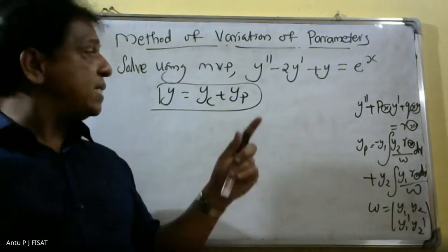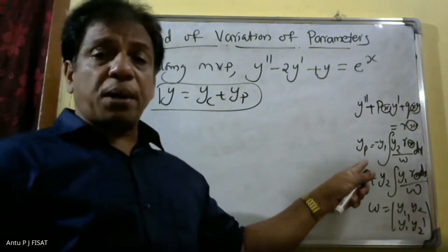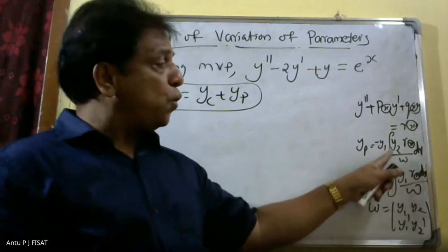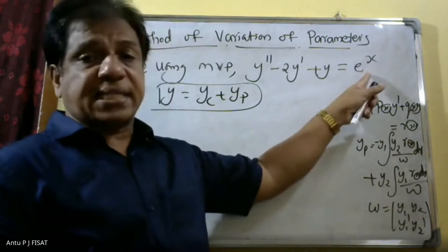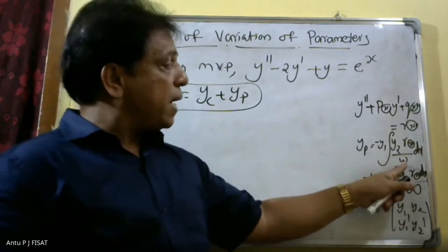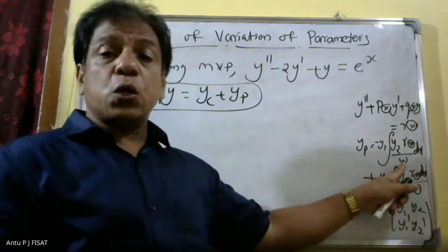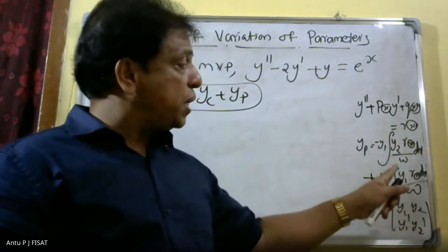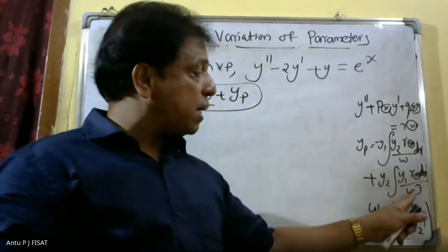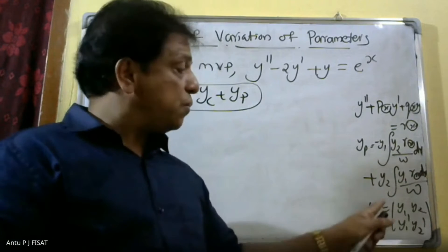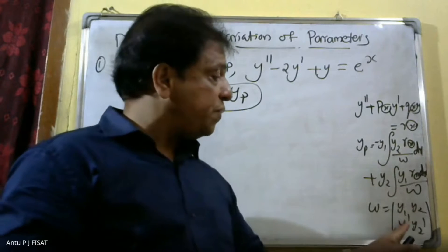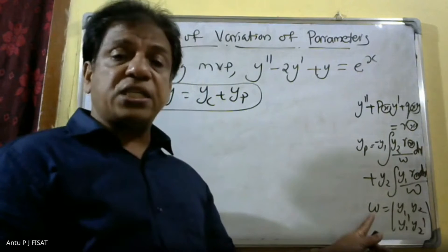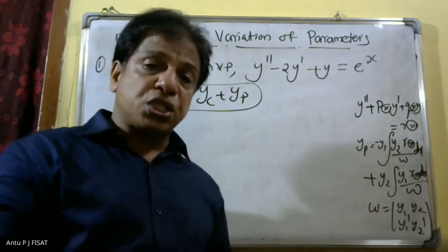To find y_p, we use the formula: y_p is equal to minus y1 times the integral of y2 times r(x) divided by w dx, plus y2 times the integral of y1 times r(x) divided by w dx. Here w is the Wronskian constant, calculated using the determinant: y1, y2, y1 dash, y2 dash.